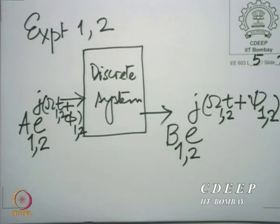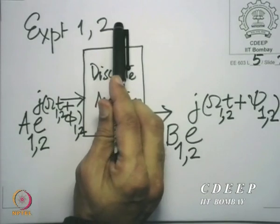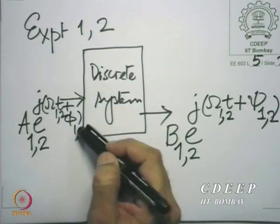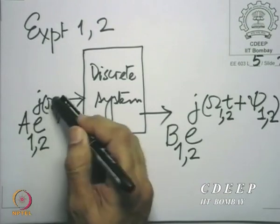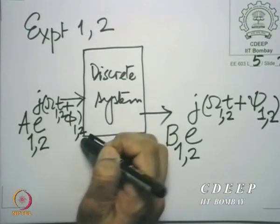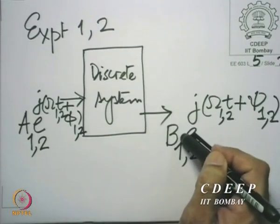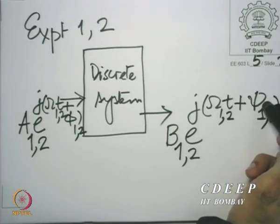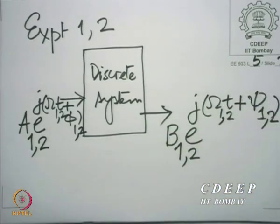The way you read it is: read it with a comma denoting 'respectively'. So experiment 1, respectively 2, has a1·e^(jω1t + φ1) applied respectively. In the second experiment it would be a2·e^(jω2t + φ2). It is the same discrete system in both experiments and the outputs are respectively b1·e^(jω1t + ψ1) and b2·e^(jω2t + ψ2). So one must read it like that — two experiments written down.